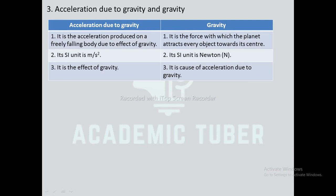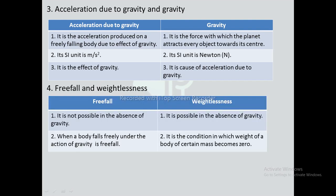Differences between acceleration due to gravity and gravity: acceleration due to gravity is the acceleration produced on a freely falling body due to the effect of gravity, whereas gravity is the force with which a planet attracts every object towards its center. SI unit of acceleration due to gravity is m/s²; SI unit of gravity is Newton. Acceleration due to gravity is the effect, whereas gravity is its cause.